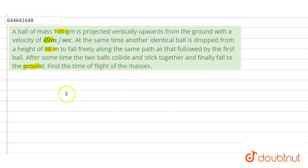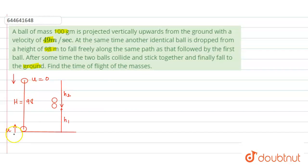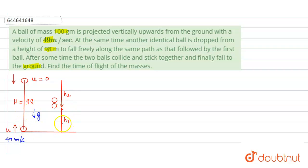We need to find the time of flight of the combined mass. As drawn here, one ball is projected upward with initial velocity u = 49 m/s, and the other is dropped from rest and moves downward. Both are acted upon by acceleration g downward. Let them collide at some point: the lower ball covers distance h1 and the upper ball covers distance h2, colliding after time t.